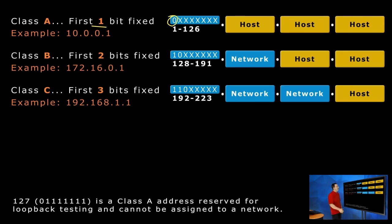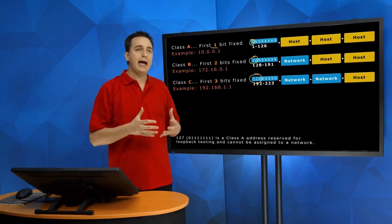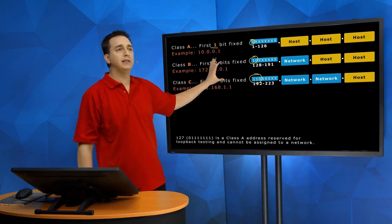For a Class B address, they all start with one, zero. And for a Class C address, they all start with one, one, zero. And then that right there represents Class A, B, or C.